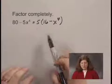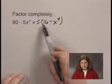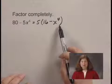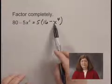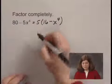Now that I've factored out a common factor, I check to see what's inside the parentheses, if that can be factored. Inside the parentheses, I have a binomial, and it is a difference of squares.